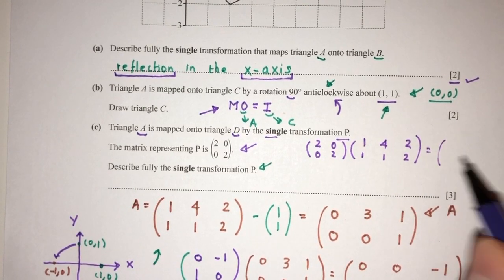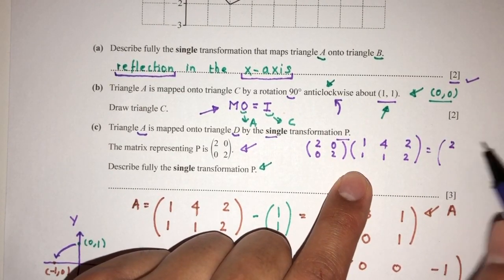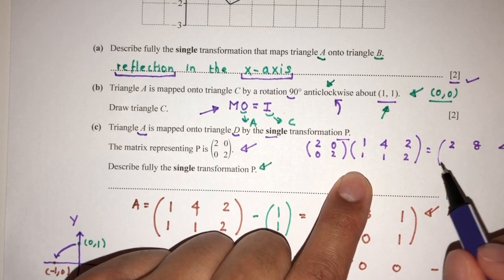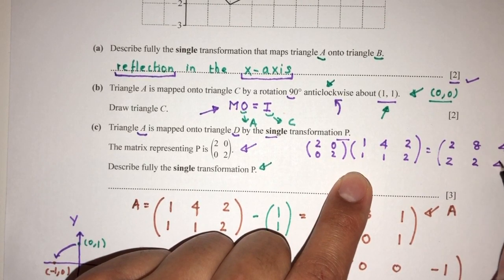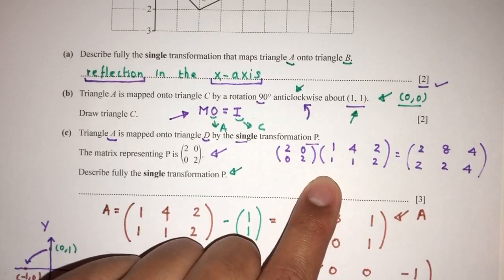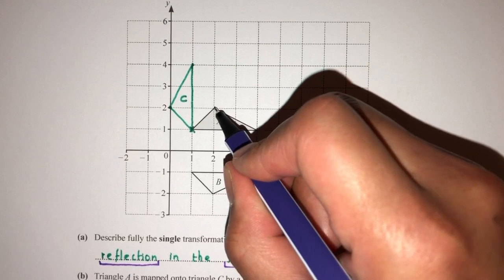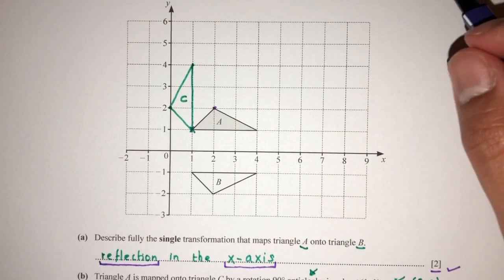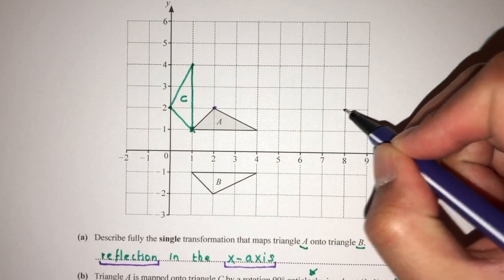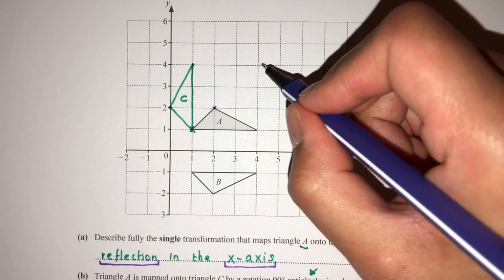And that will give you what? That will give you (2,8,4) and (2,2,4). So let's plot this diagram. Let's see what do we have. So we have (2,2), it will be this one. And we have (8,2), this one. And then (4,4) will be right here.